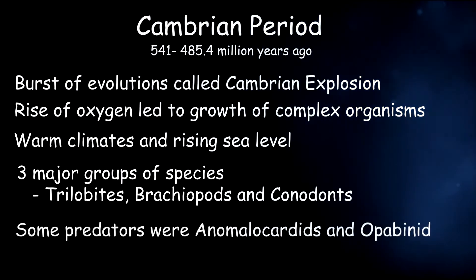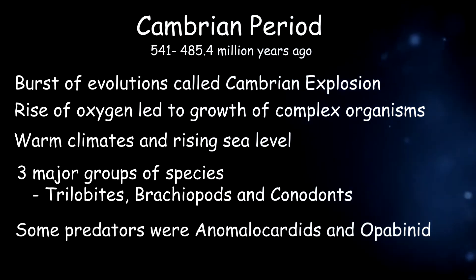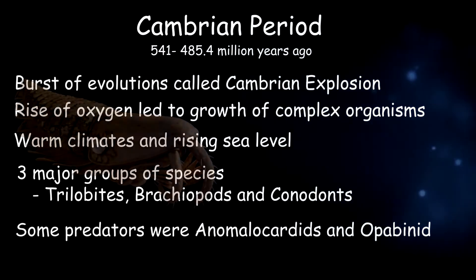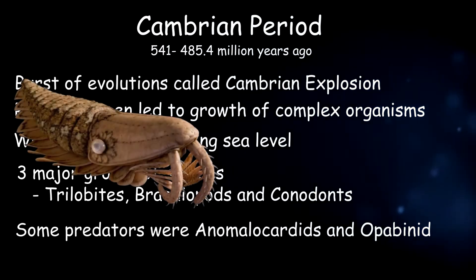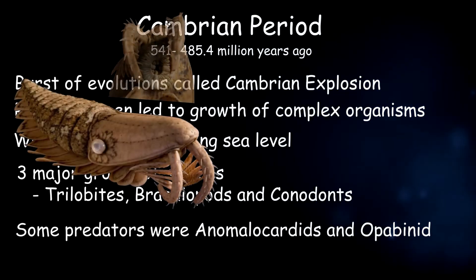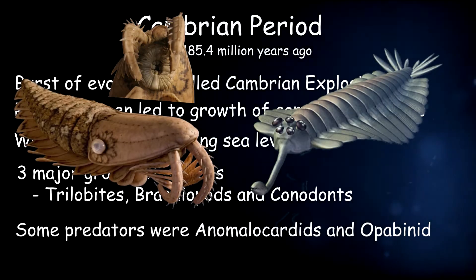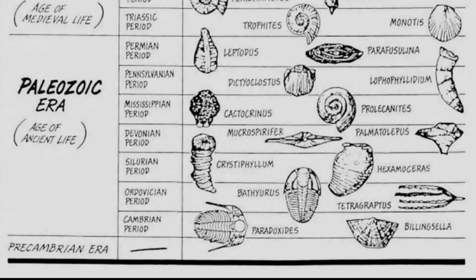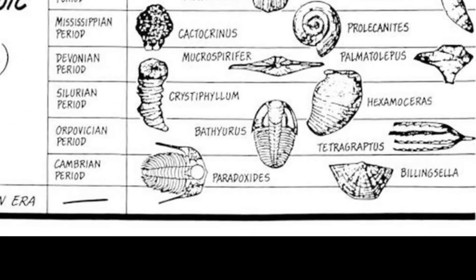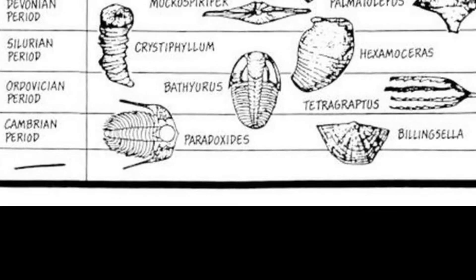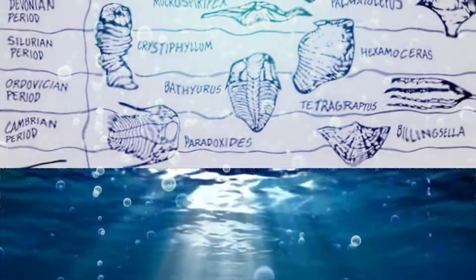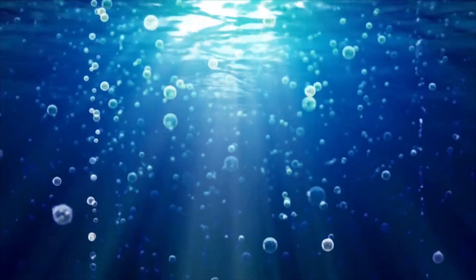Some big predators were a large shrimp called the Anomalocaris, who grabbed its prey with hooks, and another predator who used claw armor on its head. Around 485 million years ago, we see major changes in the fossil record which marks the change from the Cambrian to the Ordovician Period.